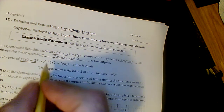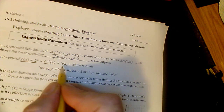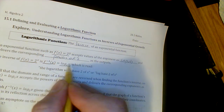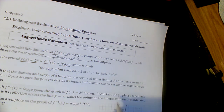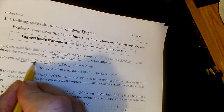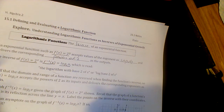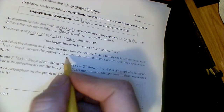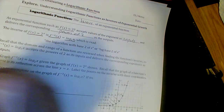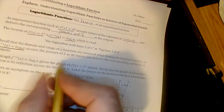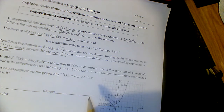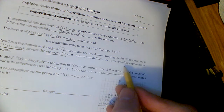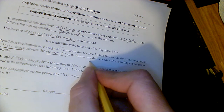The inverse of that function is log base two of x — the logarithm with base two of x. Your base stays the same; what changes is the inputs and the outputs. Recall that the domain and range of a function are reversed when finding its inverse. So log base two of x accepts powers of two as inputs — those were the outputs before — and delivers the corresponding exponents as outputs.